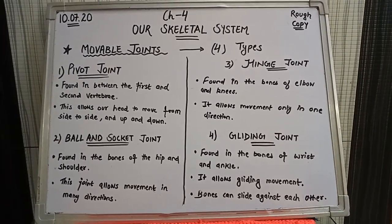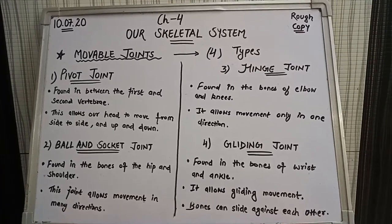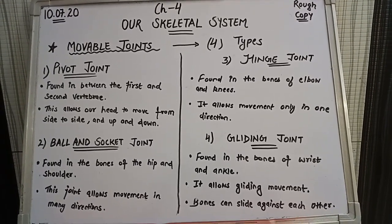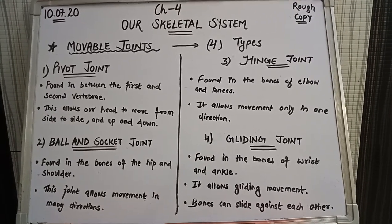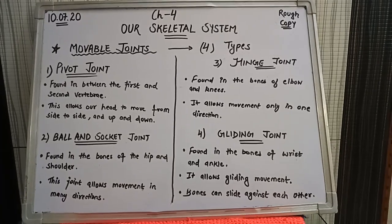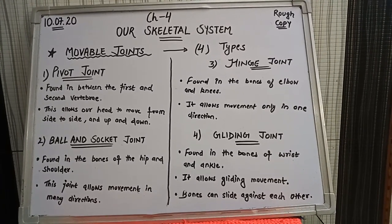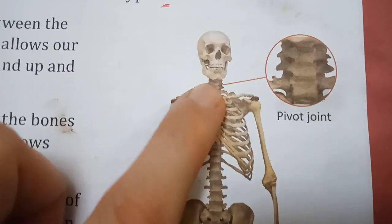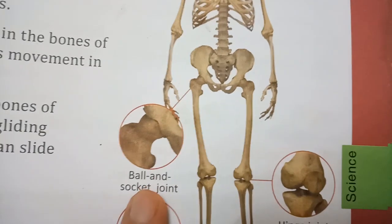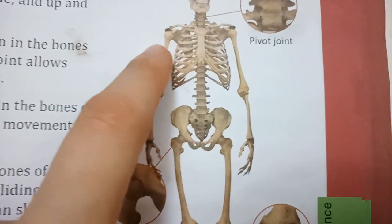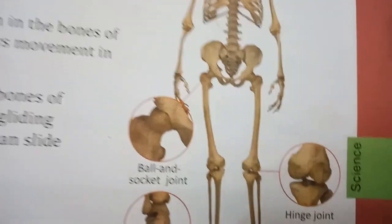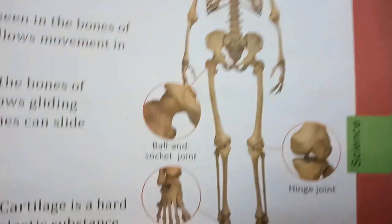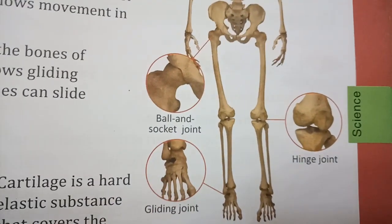So that was all about your joints: pivot joint, ball and socket joint, hinge joint, and gliding joint — these are all part of movable joints. You can note them down for further reference. The pivot joint is present in the vertebrae; ball and socket joint is present in the shoulder and hip; the hinge joint allows movement of your knees and elbows; and the gliding joint is present in your wrist and ankle.